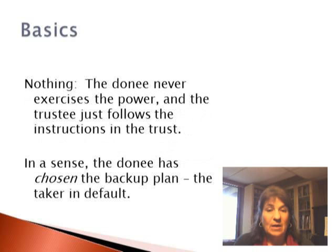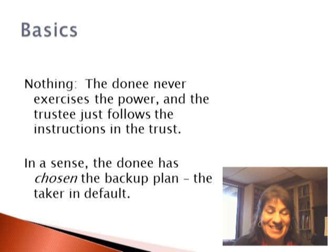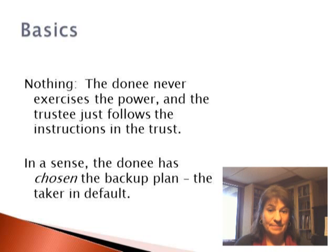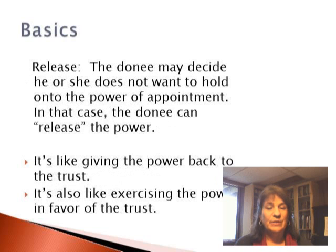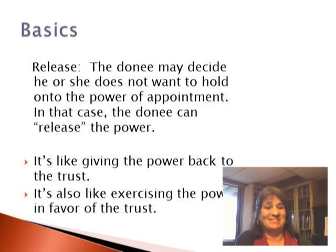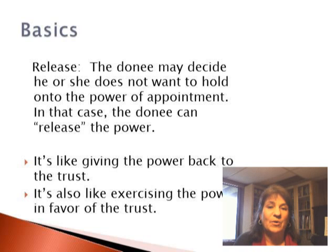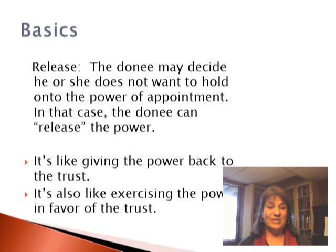Nothing: the donee never gets around to exercising the power or never wants to, and the trustee just follows instructions in the trust. In a sense, if the donee does nothing, the donee has chosen the backup plan — the taker in default. Release: the donee may decide that he or she does not want to hold on to the power, doesn't want this authority. In that case, the donee can release the power — sometimes for tax purposes. It's like giving the power back to the trust, kind of like exercising the power by taking the property and then giving it back to the trust with no strings attached.